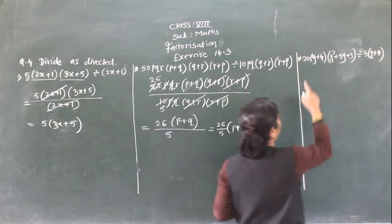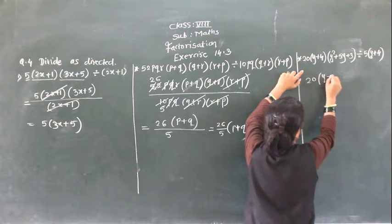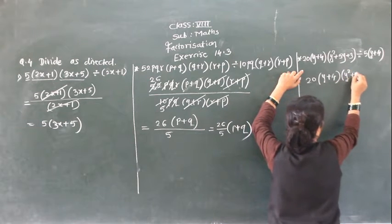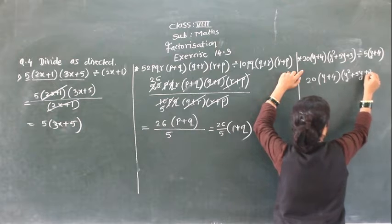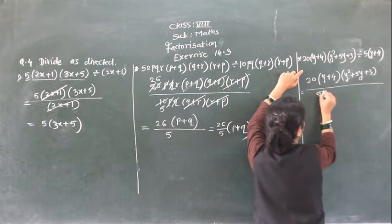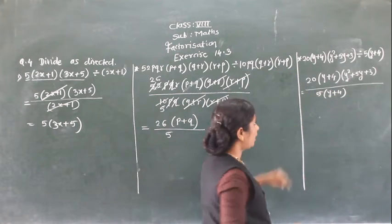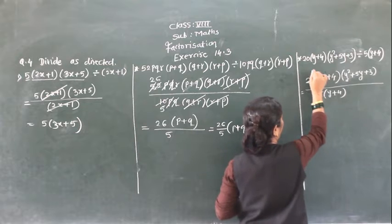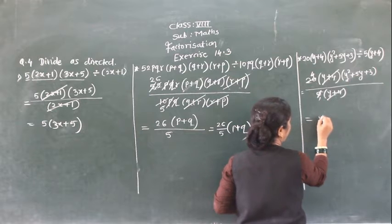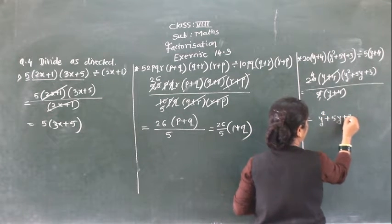Next one: 20 into (Y plus 4) and in bracket (Y square plus 5Y plus P) divided by 5 into (Y plus 4). Now 5 equals 5 and 5 equals 20, then (Y plus 4) and (Y plus 4) cancel. So you will get (Y square plus 5Y plus 3).